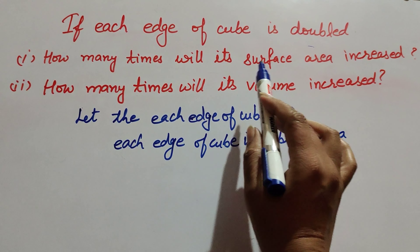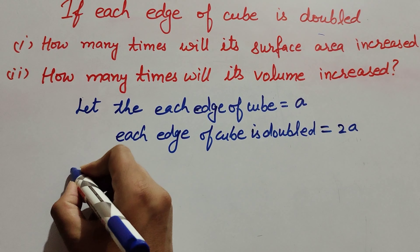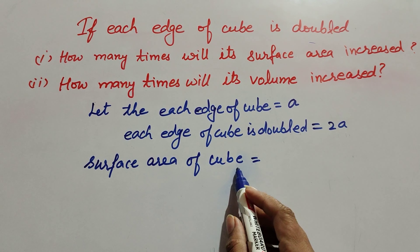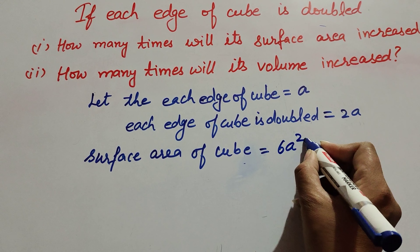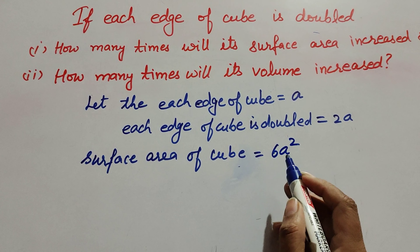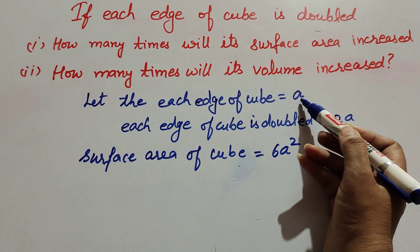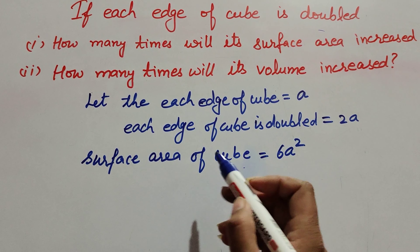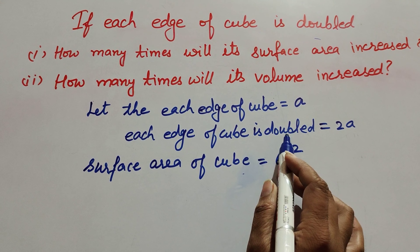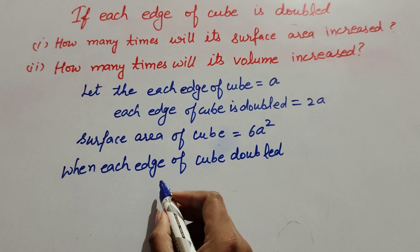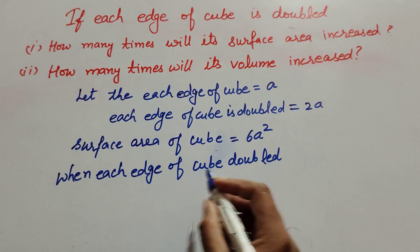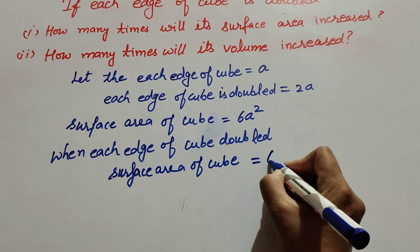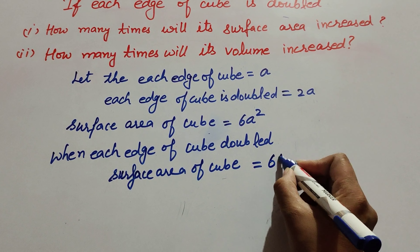We have to find how many times the surface area increases. The formula for the surface area of a cube is 6a², where 'a' is the edge of the cube. When each edge of the cube is doubled, the surface area becomes 6 into (2a) squared.